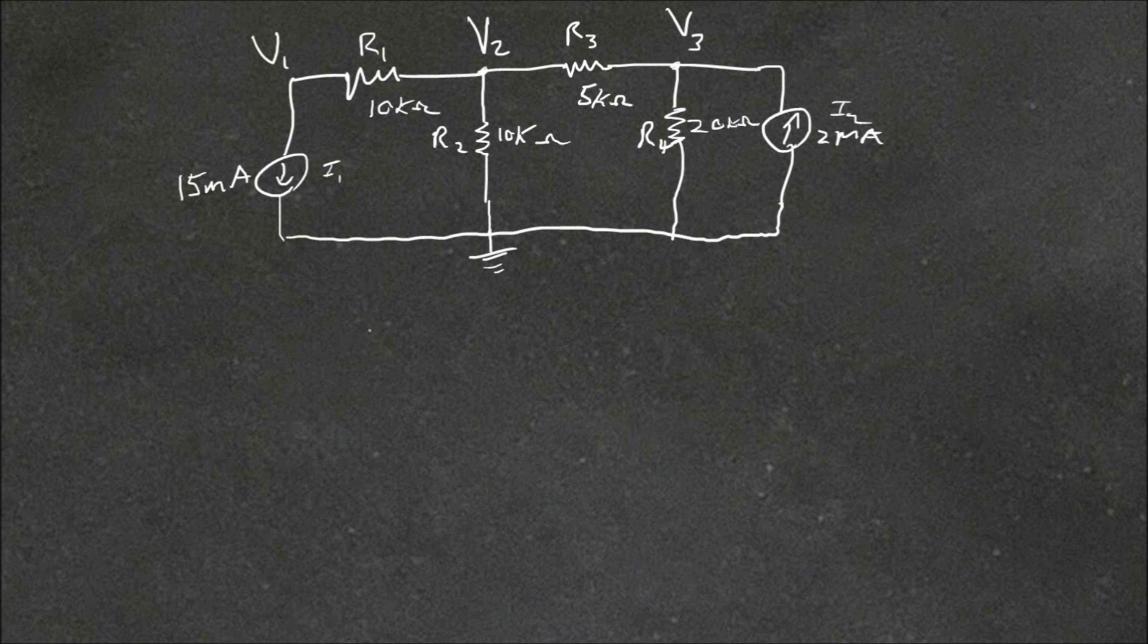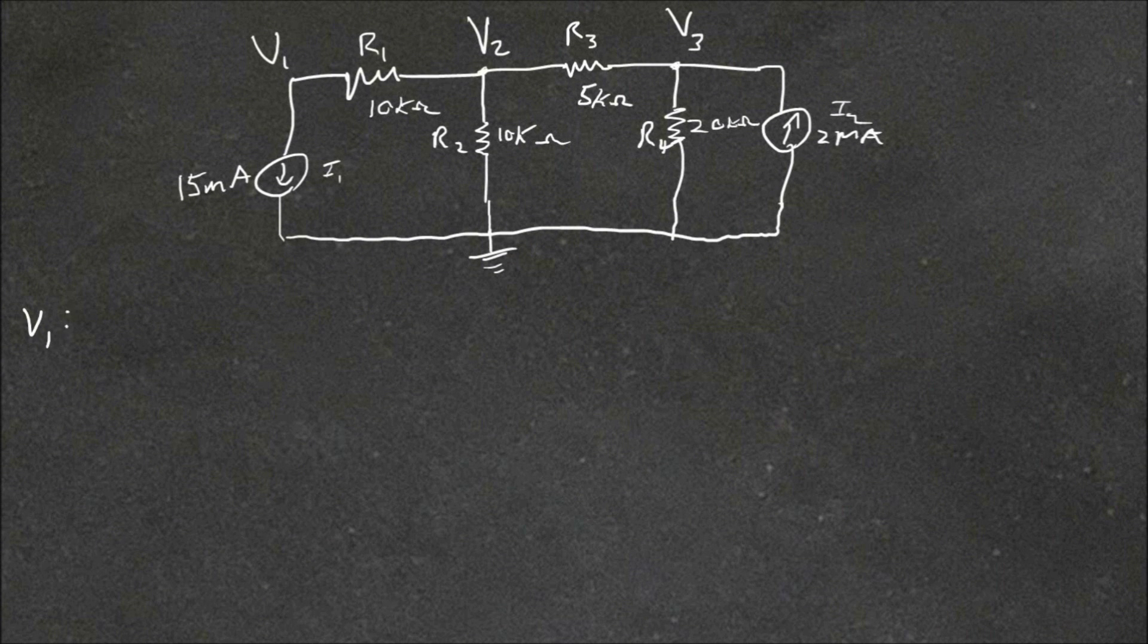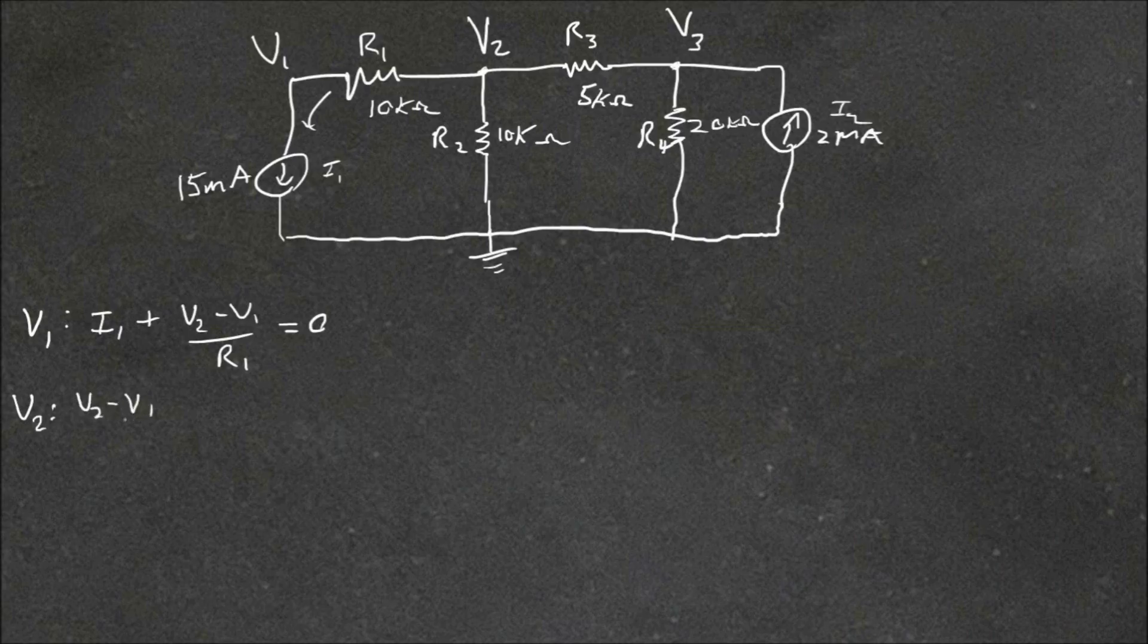So we'll jump straight to doing the KCL. At V1, the current will be going this way. And so we'd have I1 plus the voltage difference across the resistor, which is V2 minus V1 over R1, and that's equal to 0. For V2, we have the voltage drop across V1, which we just found out before. So that's V2 minus V1 over R1. We'll say the current's going down here and along here. Plus the voltage drop across R2, which is V2 over R2. Plus the voltage drop across R3, which is V2 minus V3 divided by R3, and that equals 0.